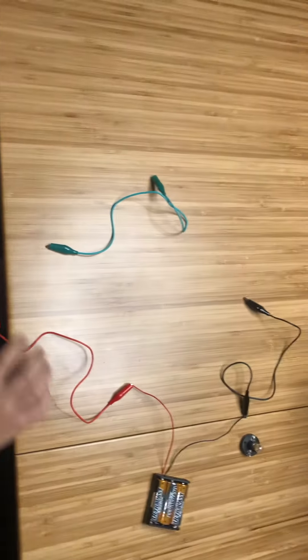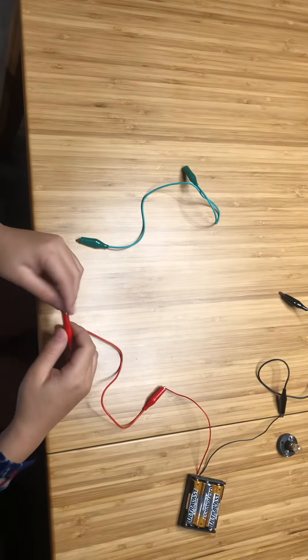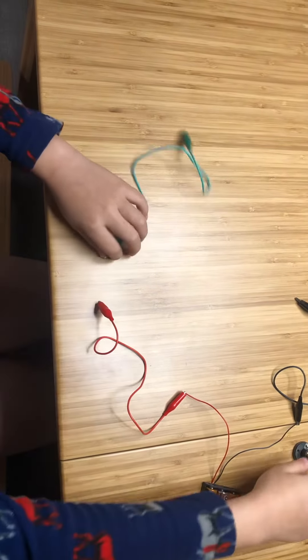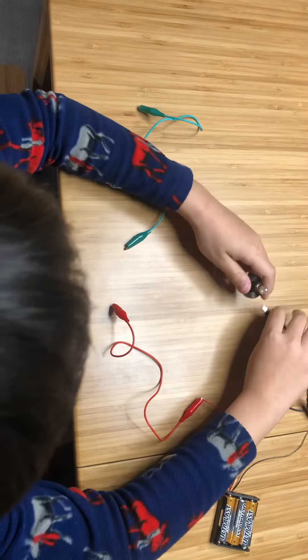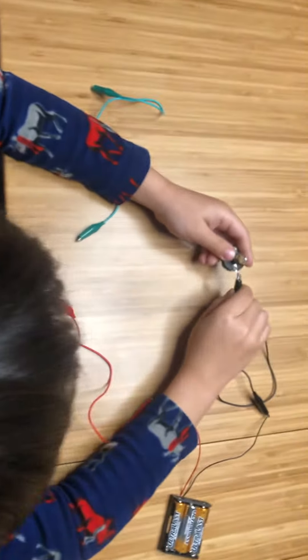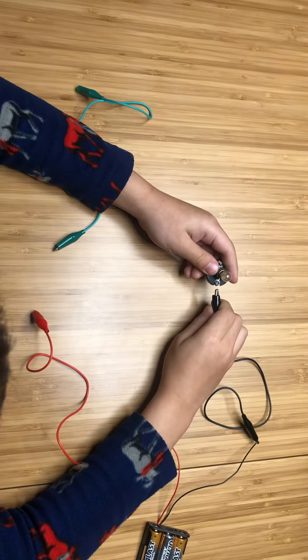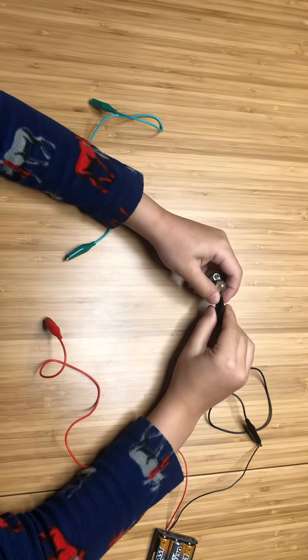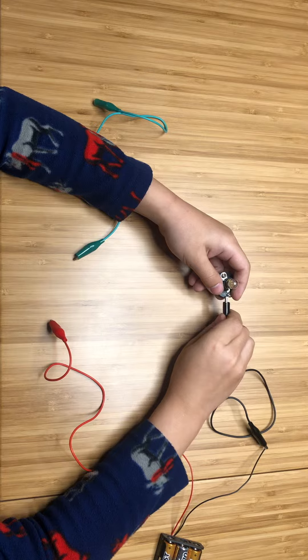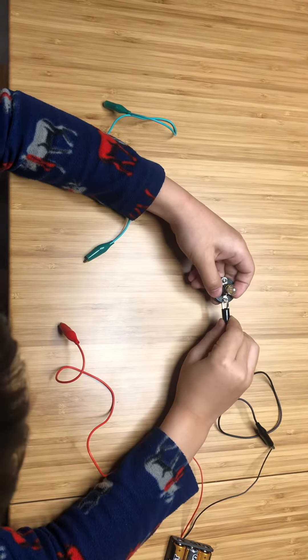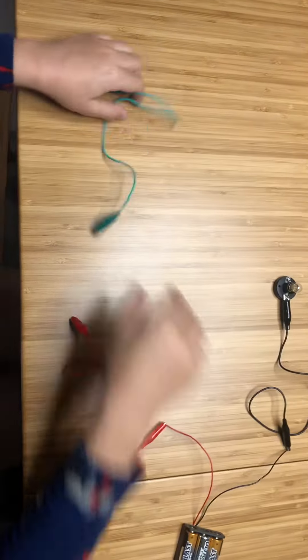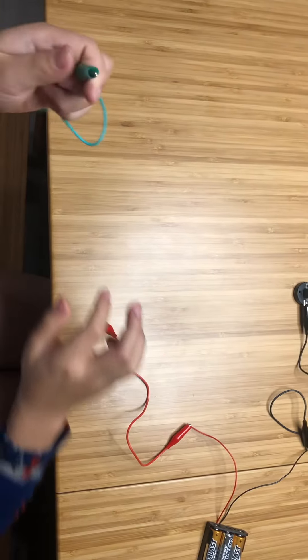Now take the black alligator clip and clip it to the light bulb on the other side. It's really hard to clip these because the rubber part is not sturdy. Now take the green alligator clip and connect it right here.